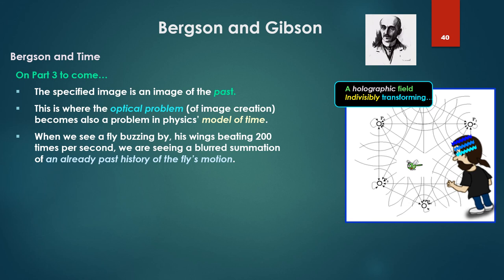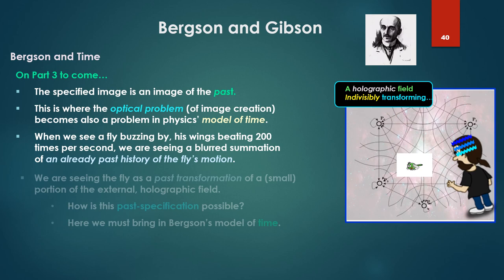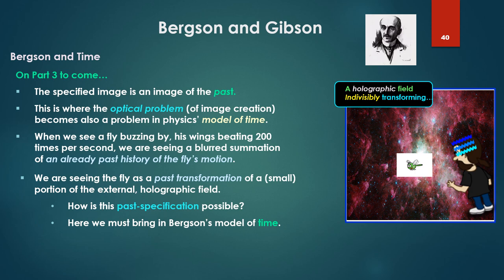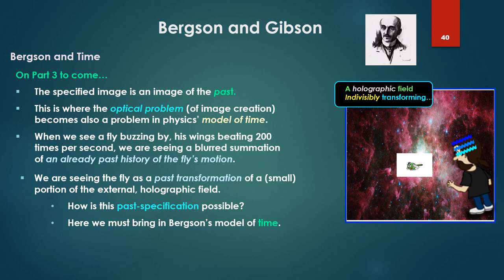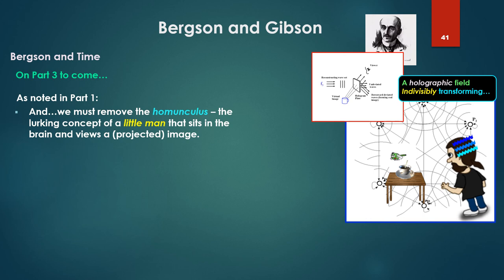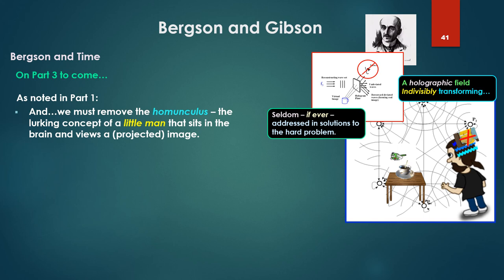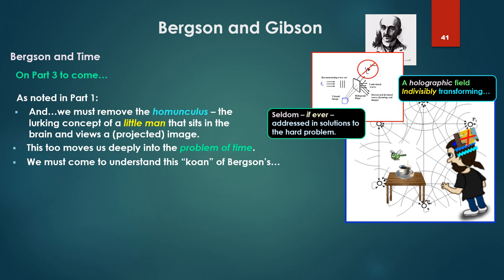In part three, the specified image is an image of the past. We've seen. This is where the optical problem, the problem of image creation, becomes also a problem in physics' model of time. When we see a fly buzzing by, its wings beating 200 times per second, we are seeing a blurred summation of an already past history of the fly's motion. We are seeing the fly as a past transformation of a small portion of the external holographic field. How is this past specification possible? Here we're going to have to bring in Bergson's model of time. As noted in part one, we must also remove the homunculus, the lurking concept of a little man that sits in the brain and views the projected image. Something, by the way, you will almost never see a solution to - the hard problem. Read by Dennett. This moves us deeply into the problem of time. We must come to understand this koan, the Zen koan, shall we say, of Bergson's. Questions related to subject and object, to their distinction and their union, must be put in terms of time rather than of space.